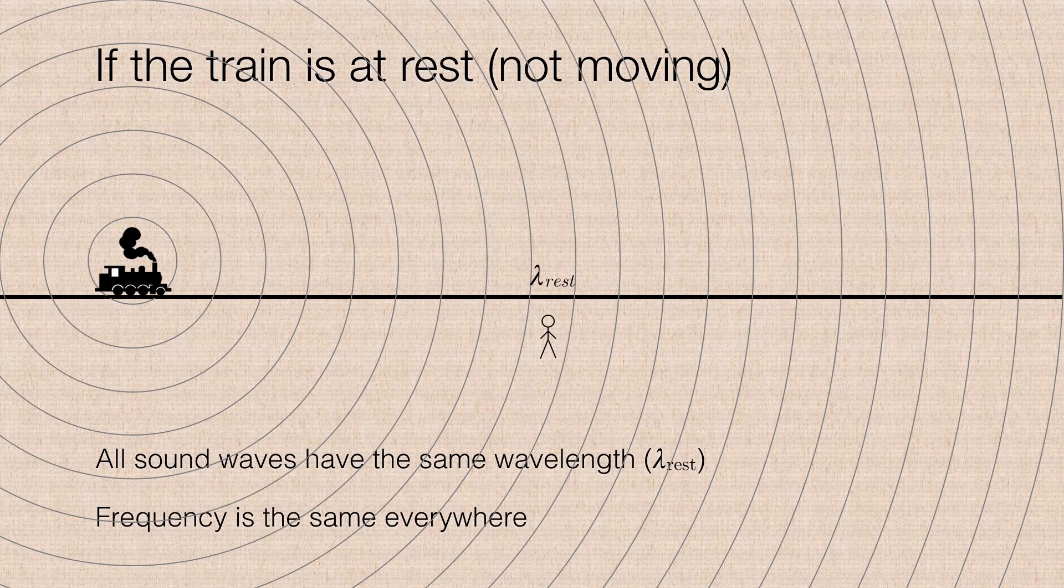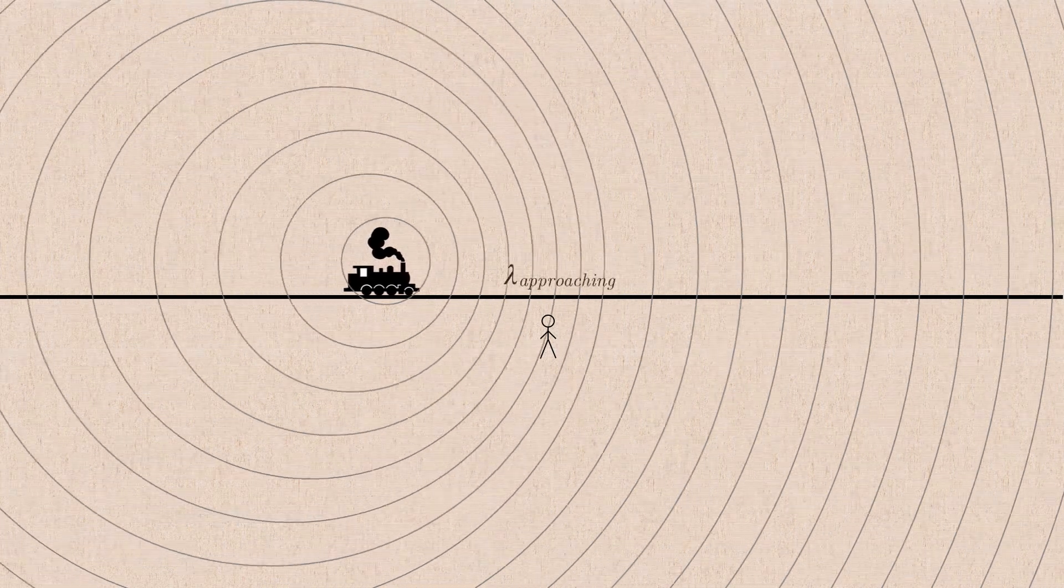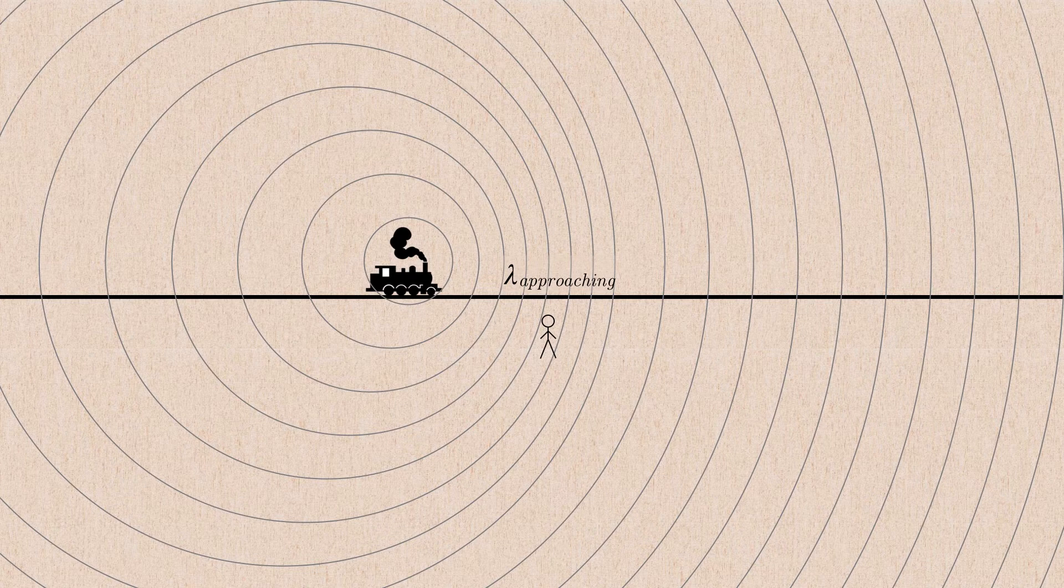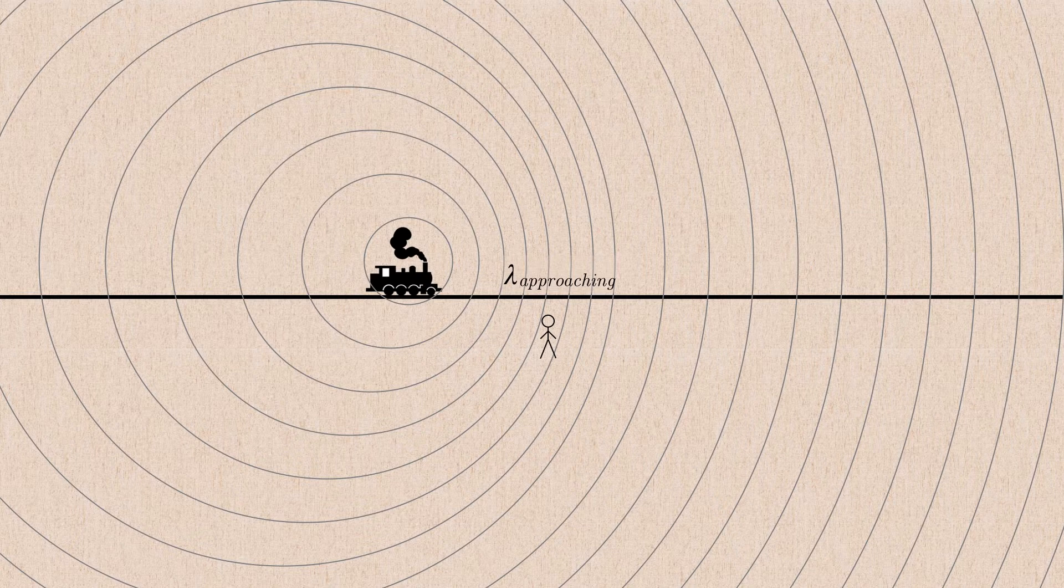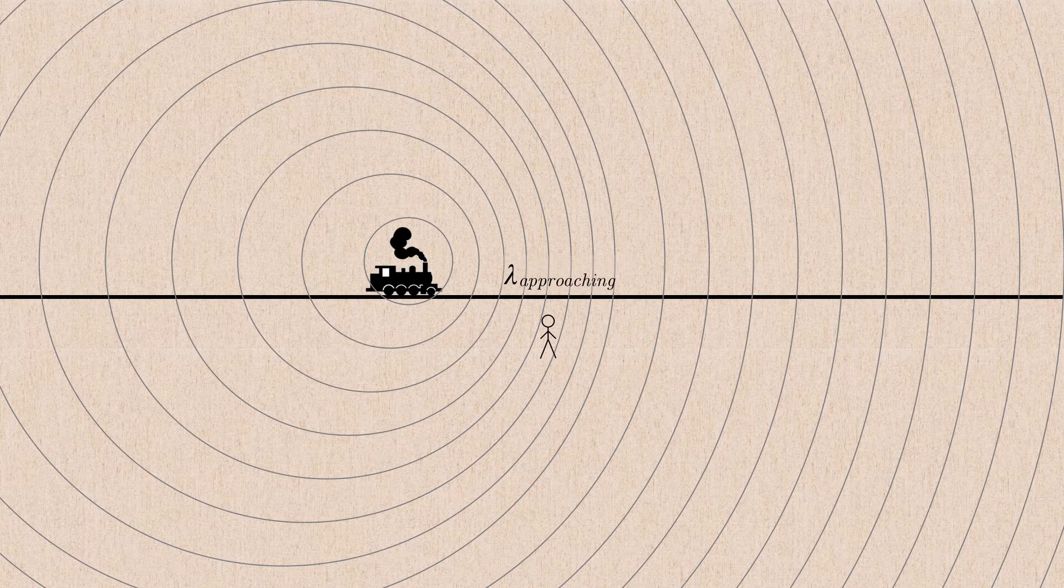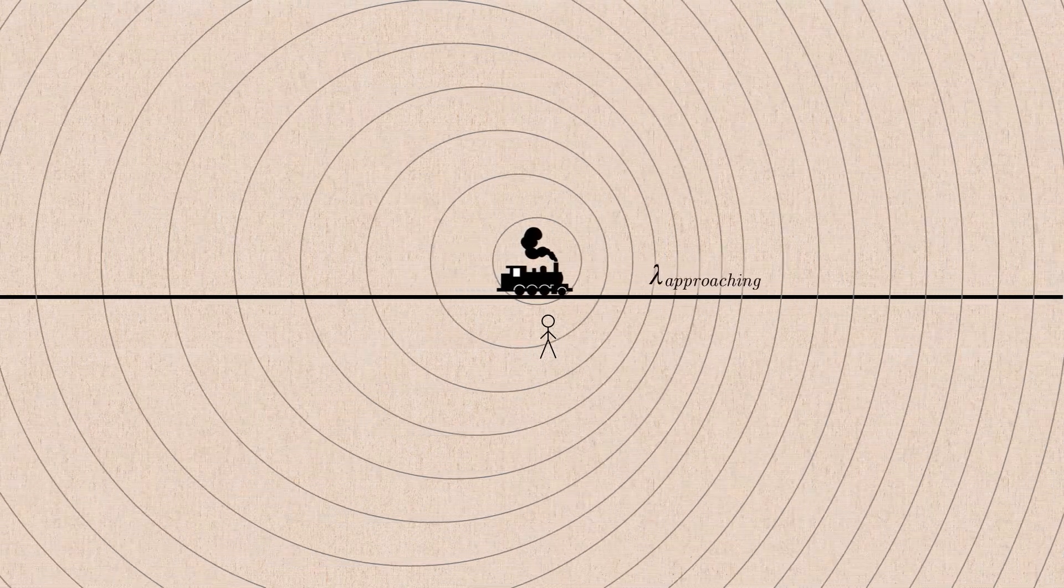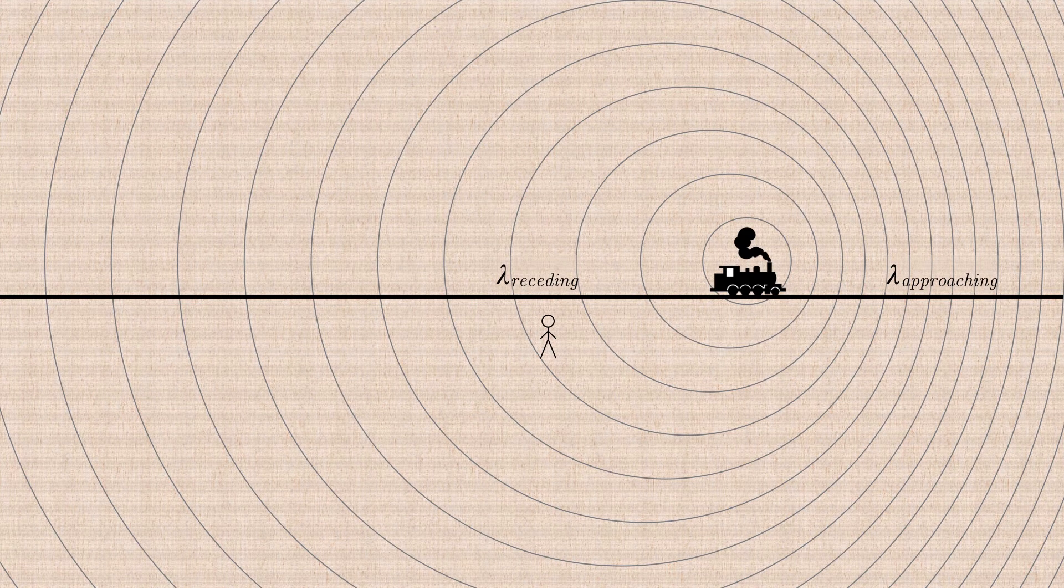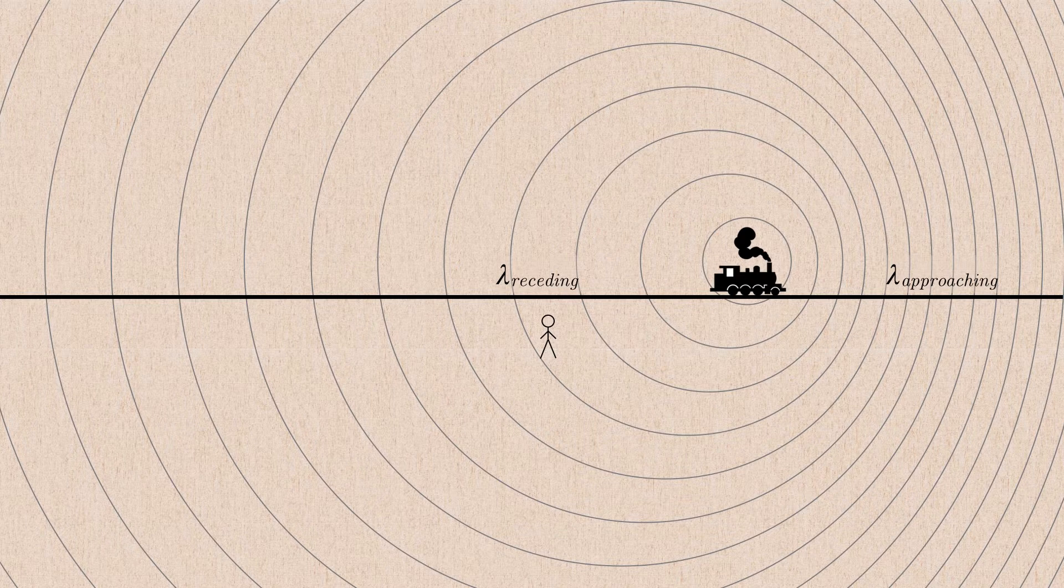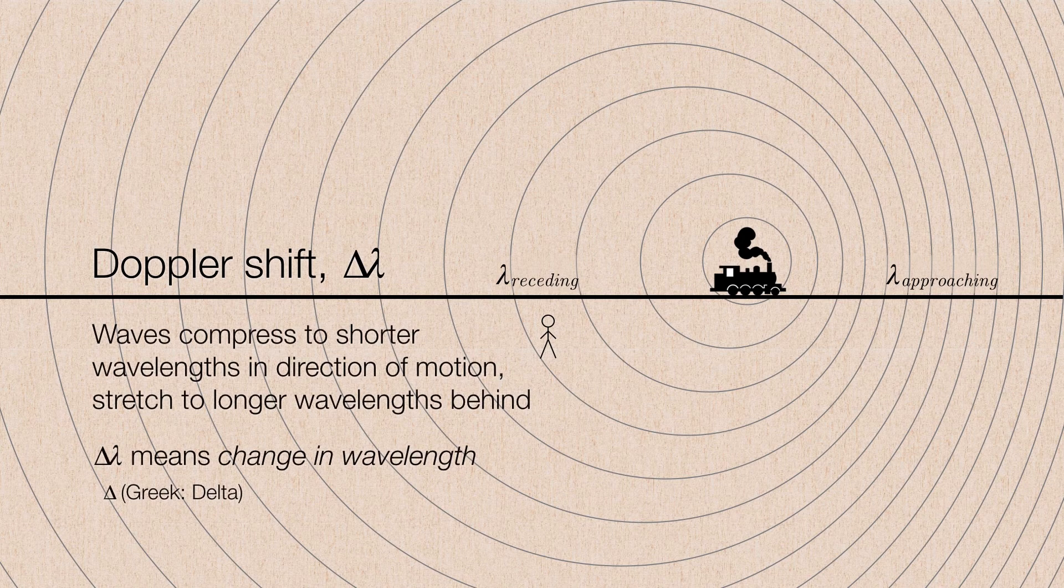But if the train gets moving down the track, now the waves in front of the train are compressed into shorter wavelengths. Or, since wavelengths are inversely proportional to frequency, the pitch or the frequency of the train's horn increases. But as the train passes you by, you are now listening to the waves that are being stretched behind the train, and so the frequency of the sound drops precipitously. So this is the Doppler shift in a nutshell.